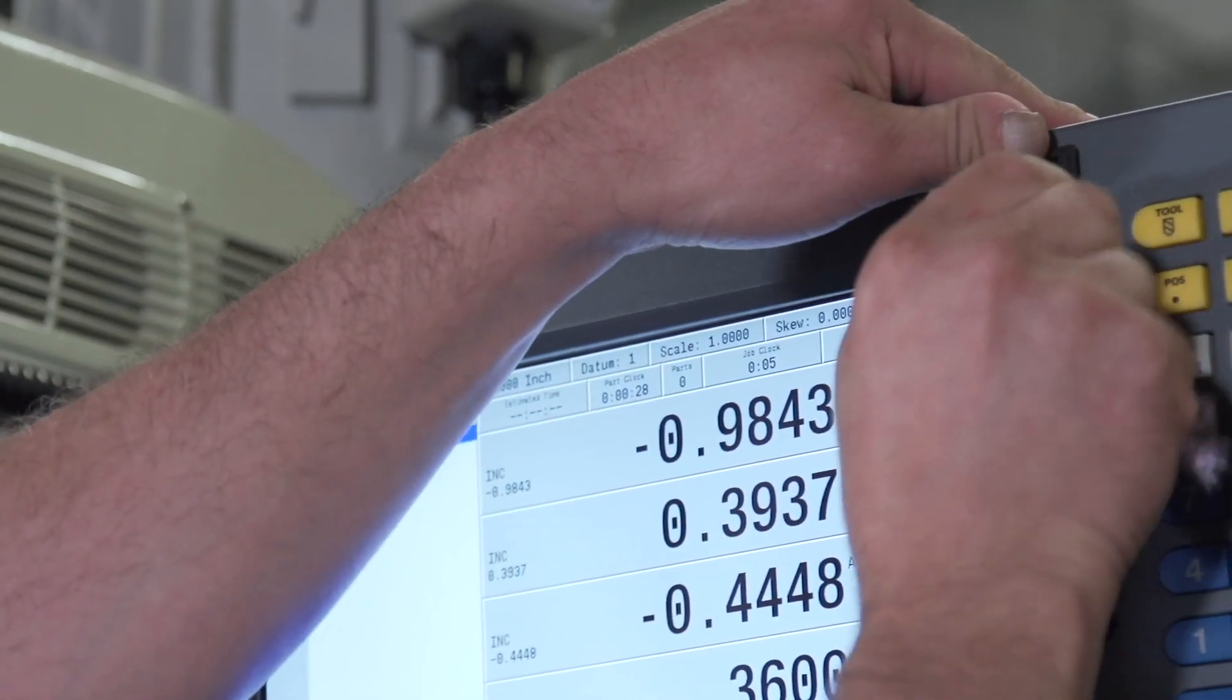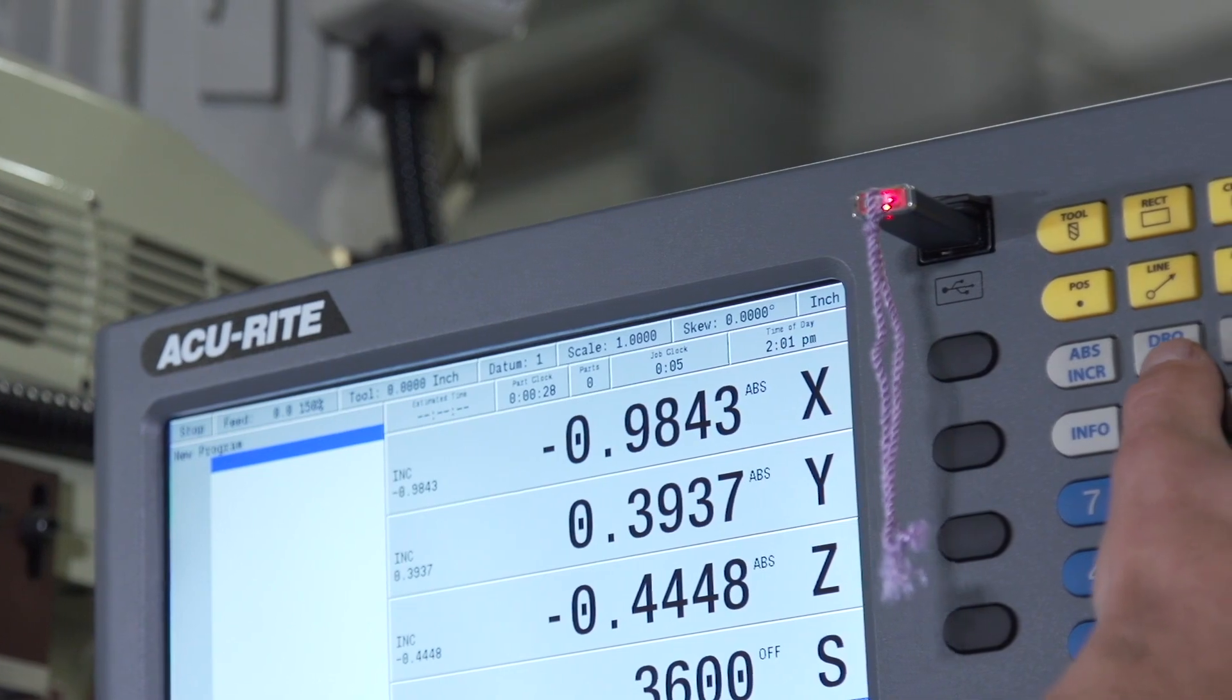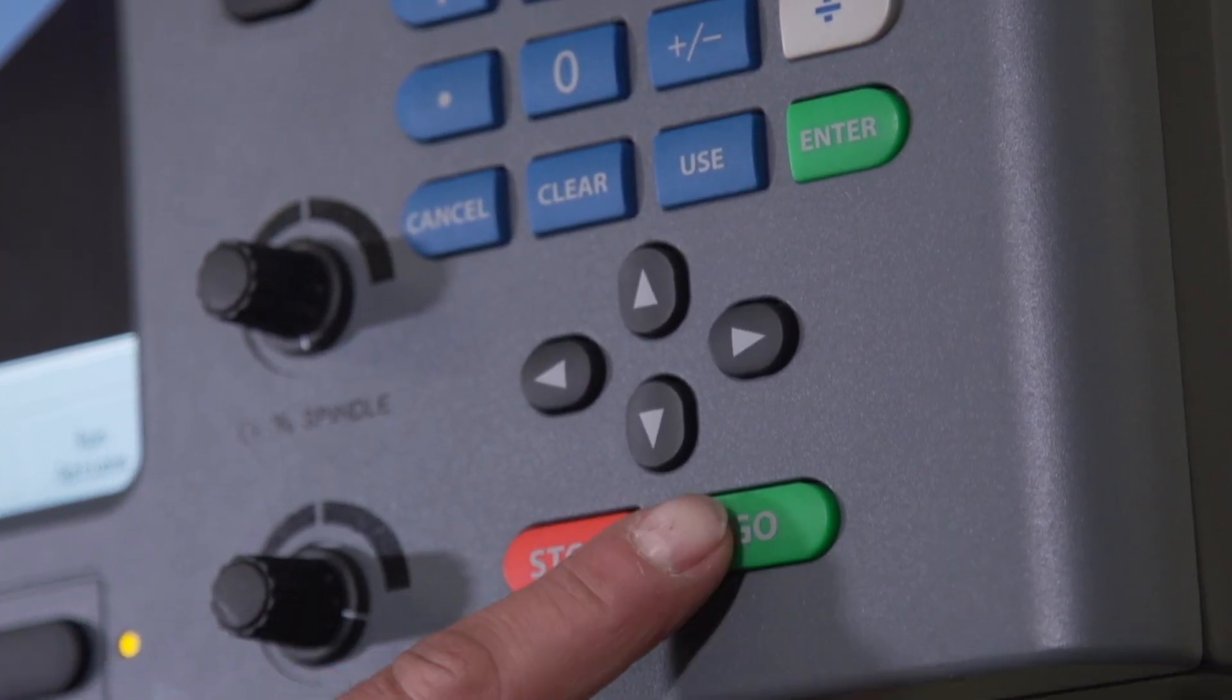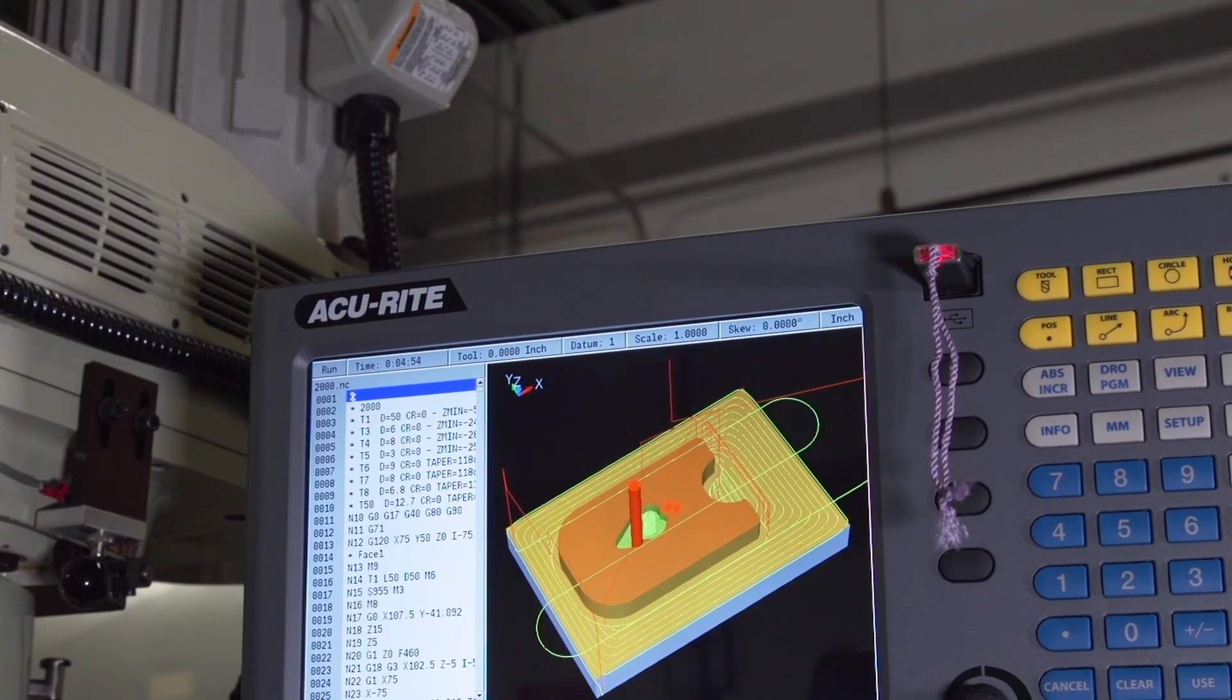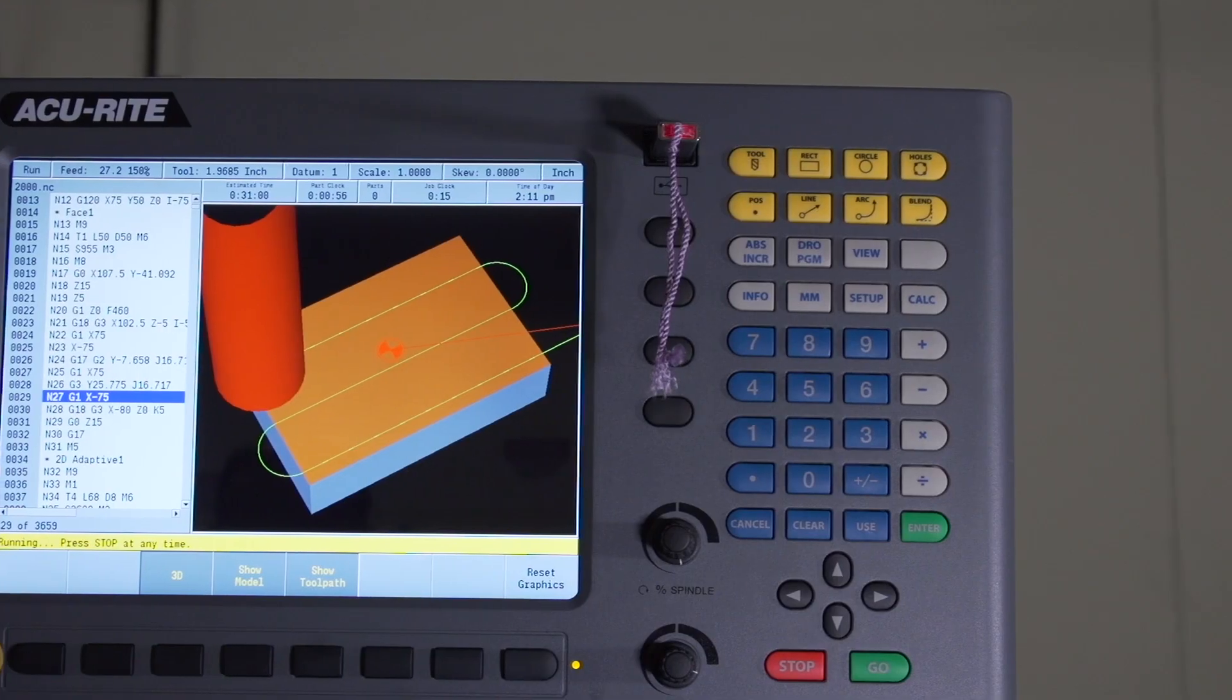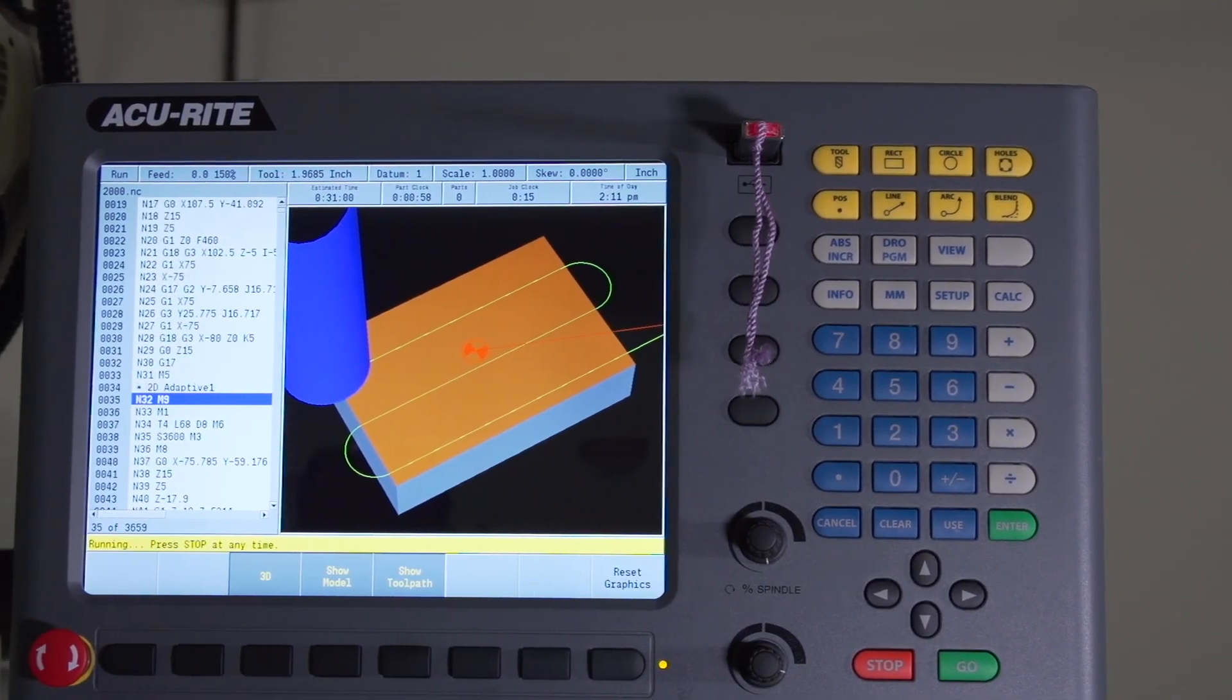Acurite controls bridge the gap between manual machining and full CNC control. While most users leverage the ability to intuitively create part programs on the control, it also supports advanced features when communicating with CAM systems.